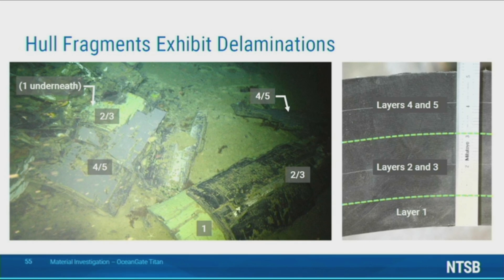The delamination between the innermost shell and the middle shell occurred within the adhesive at the layer one to layer two interface for all the pieces that could be examined. This was seen earlier on the single layer piece at the forward end of the hull and it can be seen here for the layer labeled one at the lower right of the image. Another layer one piece is hidden on this image but is visible on the next slide, and it too shows separation within the adhesive.